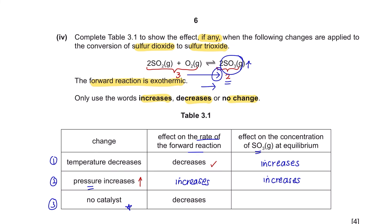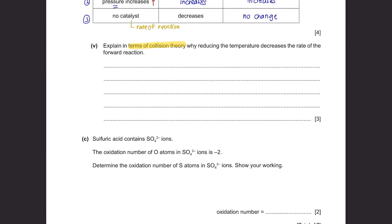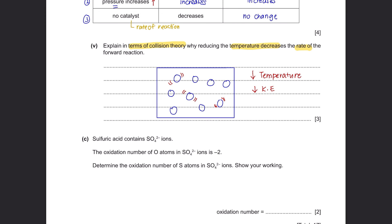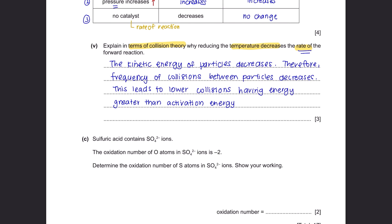The last change is removing the catalyst. The presence of a catalyst only affects the rate of reaction — how fast the reaction occurs — but it does not have any effect on the equilibrium position. So the answer here is no change. Part 5: Explain in terms of collision theory why reducing temperature decreases the rate of the forward reaction. When temperature decreases, the kinetic energy of particles decreases, so the frequency of collisions between particles also decreases, resulting in fewer successful collisions.